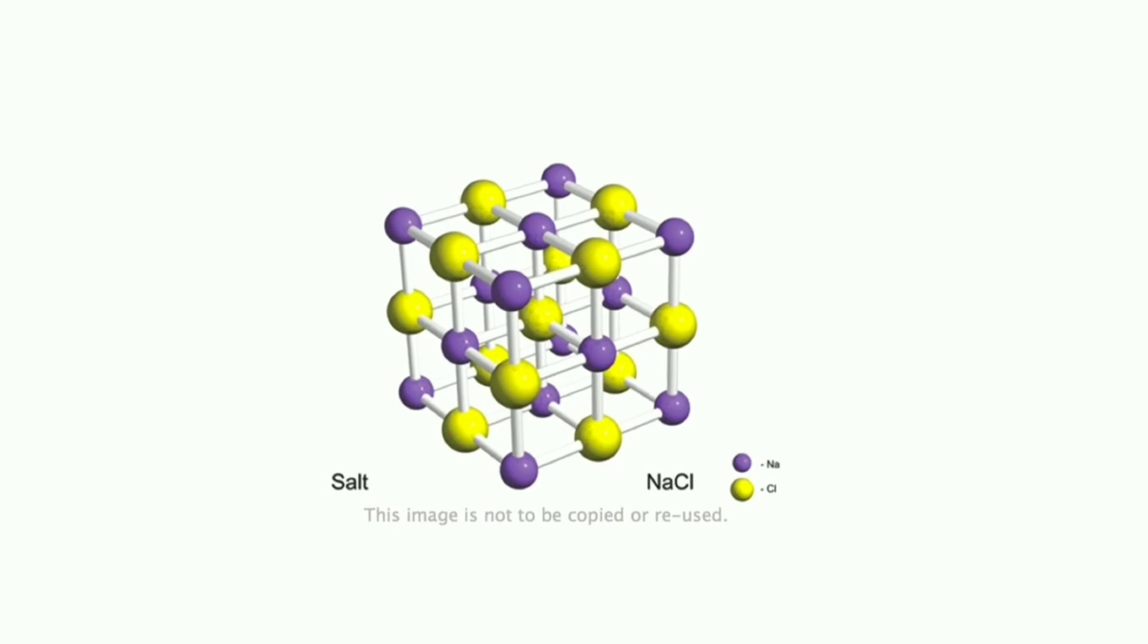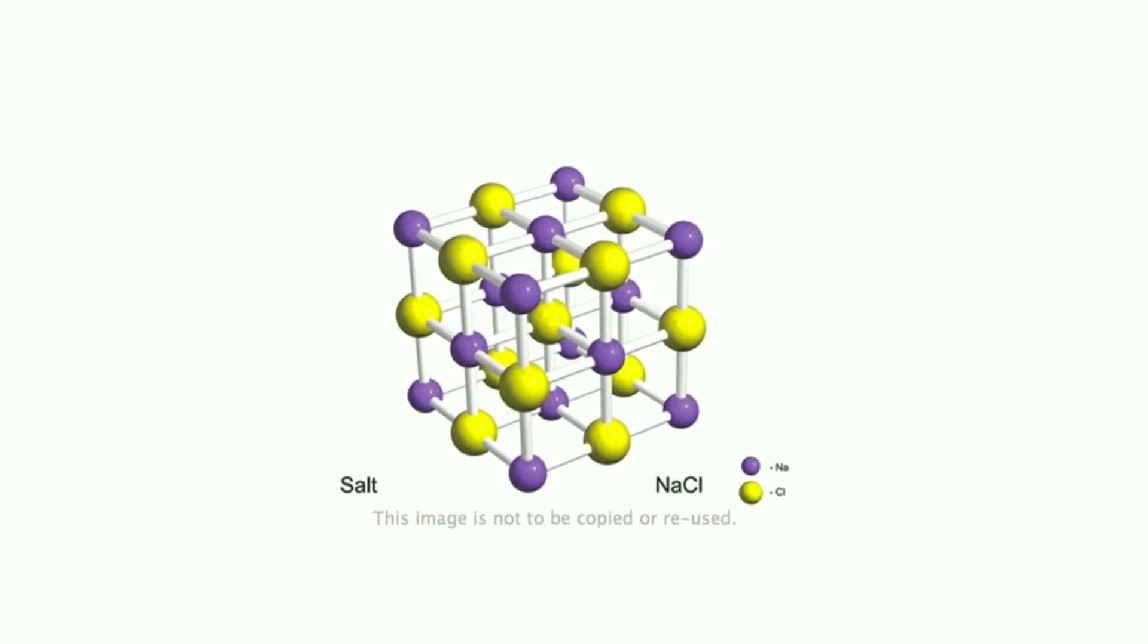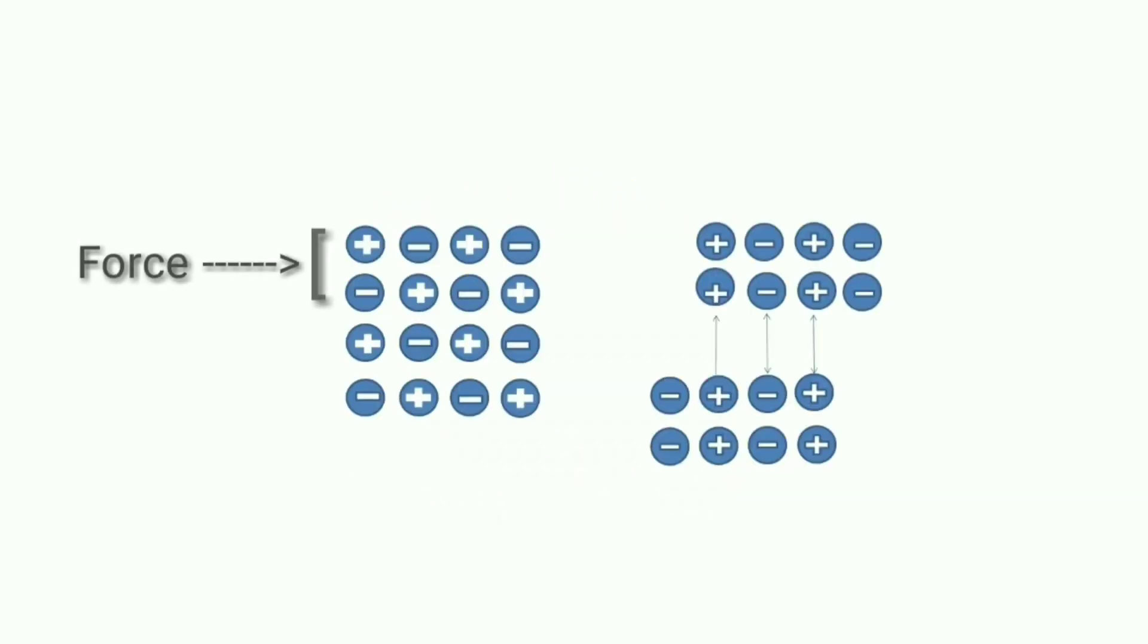Now when we give force on the compound, one layer of ions gets apart one unit from another layer. I mean, I repeat it: I gave force on that part and the ions will get apart one unit from another layer of ions.